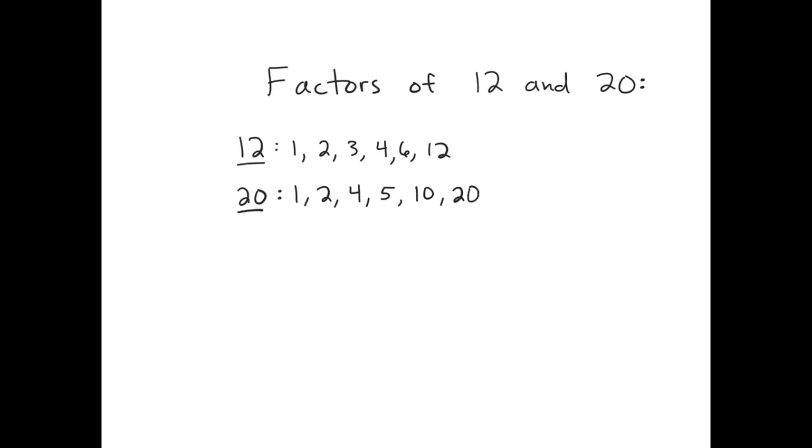Now, if I want to find all the factors that they have in common, I would start looking for common factors. 1 is a factor for both of those numbers, 2 is a factor for both of those numbers, and 4 is a factor for both of those numbers. Those are all what we call common factors.